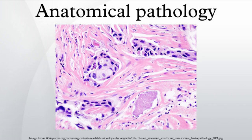Anatomical pathology is one of two branches of pathology, the other being clinical pathology — the diagnosis of disease through the laboratory analysis of bodily fluids and/or tissues. Often, pathologists practice both anatomical and clinical pathology, a combination known as general pathology.